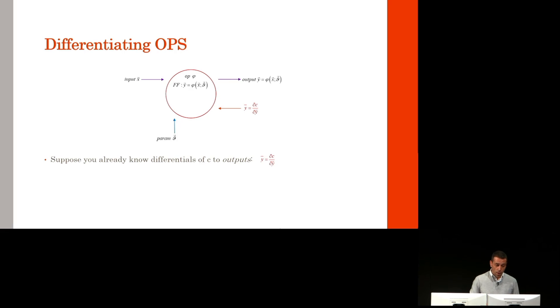We can differentiate an op. Suppose you already know the differentials of some result C to the outputs, dc/dy, which we'll conveniently denote Y bar. Then, by the chain rule, you can immediately compute the differentials to the inputs, dc/dx, equal dy/dx times dc/dy.